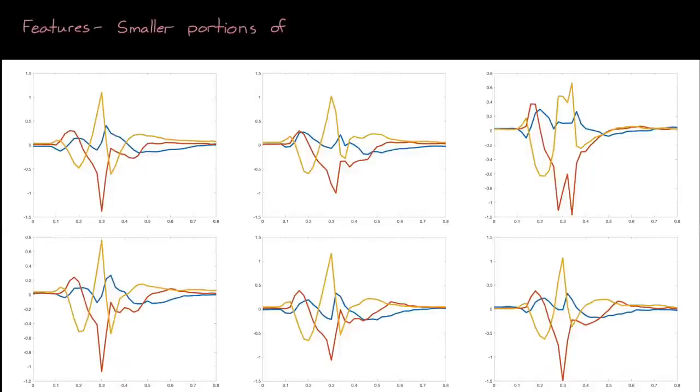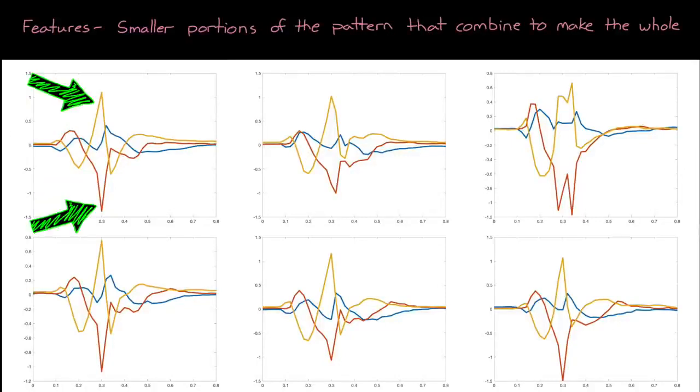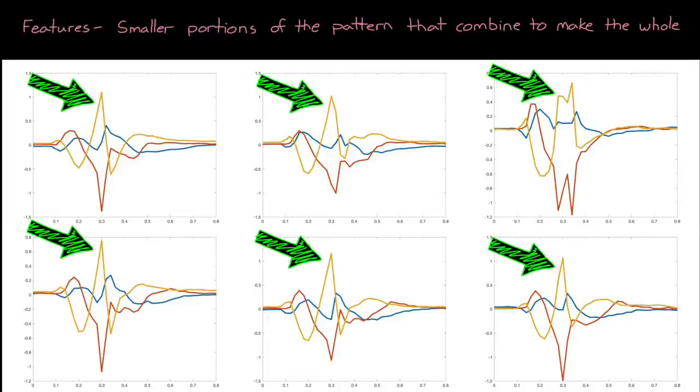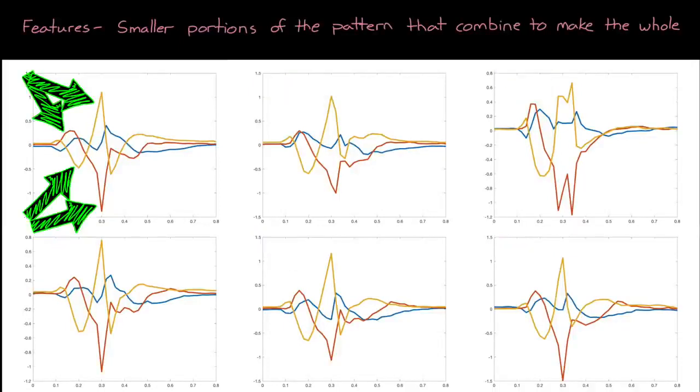By features, I mean smaller portions of the pattern that combine to make up the entire profile. For example, we may reason that a high five profile consists of a slow acceleration at the beginning, corresponding to a person raising their hand, then another slow acceleration as they move their hand backward, followed by a quick acceleration as their hand moves forward and makes contact with another person.